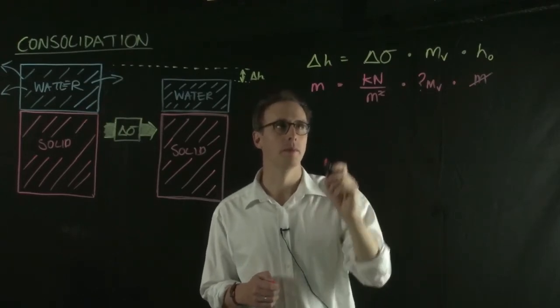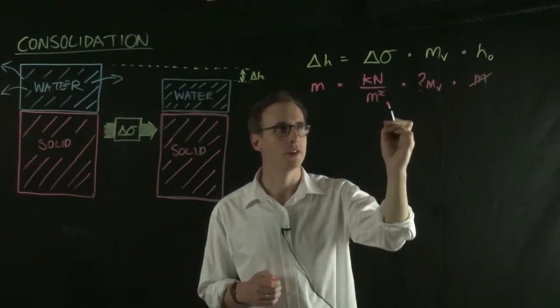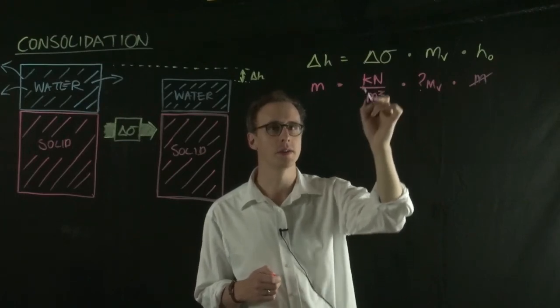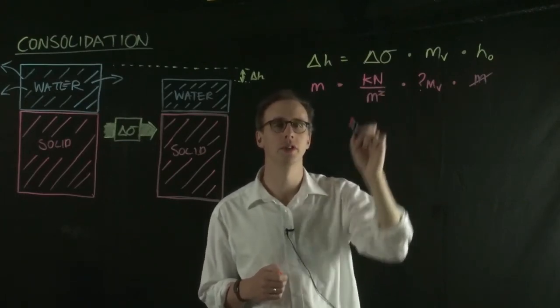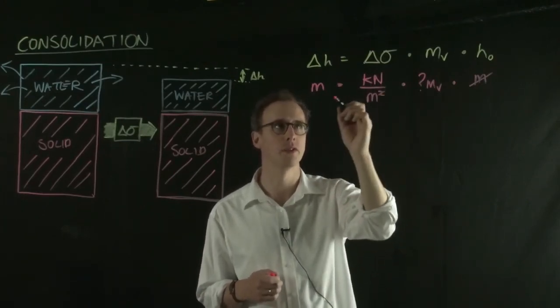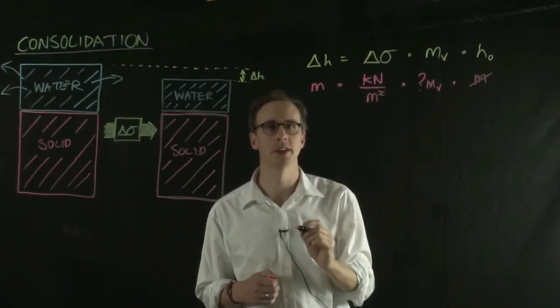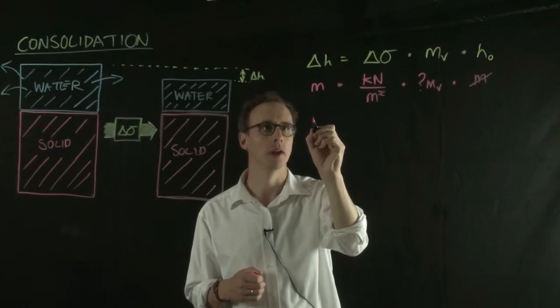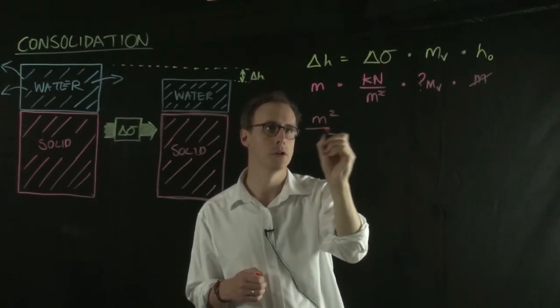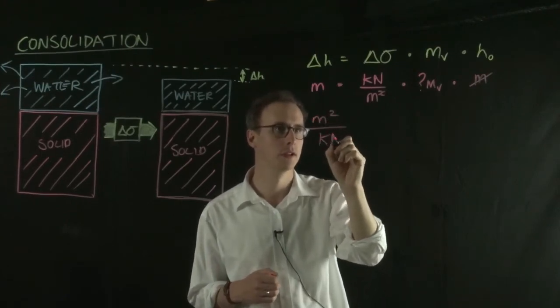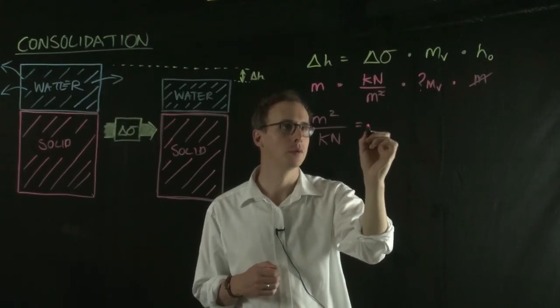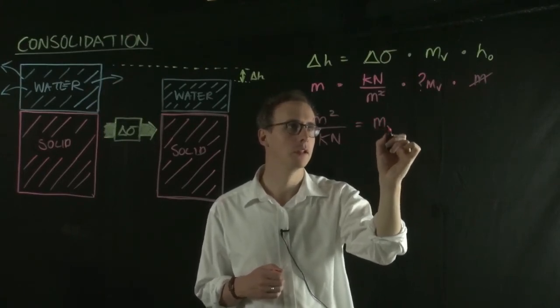If we then take this unit of stress to the other side of the equation—multiply both sides by meters and divide both sides by kilonewtons—what we're left with is meters squared over kilonewtons, which equals MV.